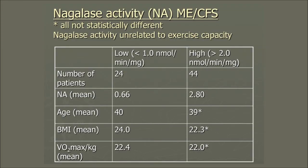Recently — and this is the first time I've shown these data — we looked at patients with relatively low nagelase activity versus all patients with more than 2.0 nanomoles per milligram per milligram. I had 24 patients in one group and 44 in the other. The two groups differed in nagelase activity but not in age or BMI. There was also no difference in VO2 max between the two groups, suggesting nagelase is not responsible for exercise capacity changes and is not a useful parameter for VO2 max in these patients.